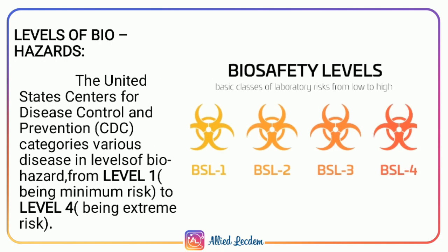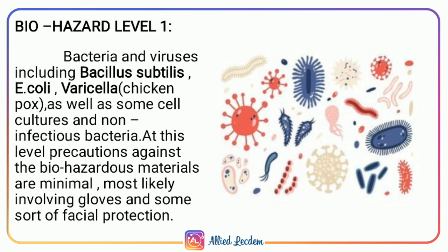Levels of Biohazards. The United States CDC — Centers for Disease Control and Prevention — categorizes various diseases in different levels of biohazard, ranging from level 1 being minimum risk to level 4 being extreme risk. Biohazard Level 1 includes bacteria and viruses such as Bacillus subtilis, E. coli, varicella zoster or chickenpox, as well as some cell cultures and non-infectious bacteria. At this level, only minimal precautions are required, most likely involving gloves and some sort of facial protection equipment like goggles and face masks.